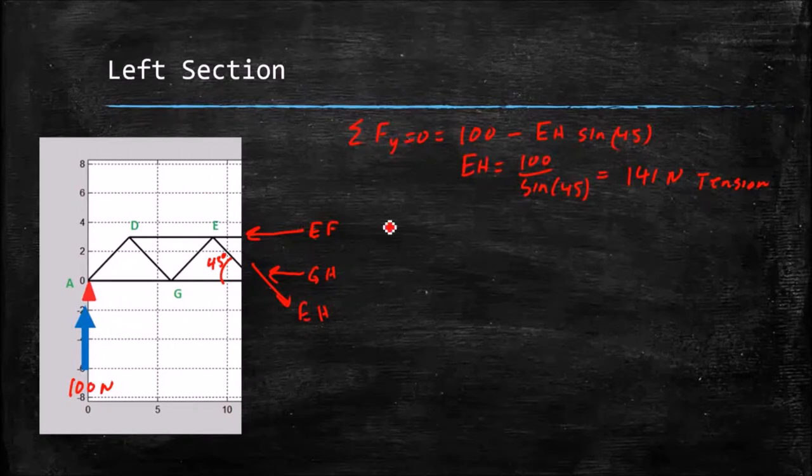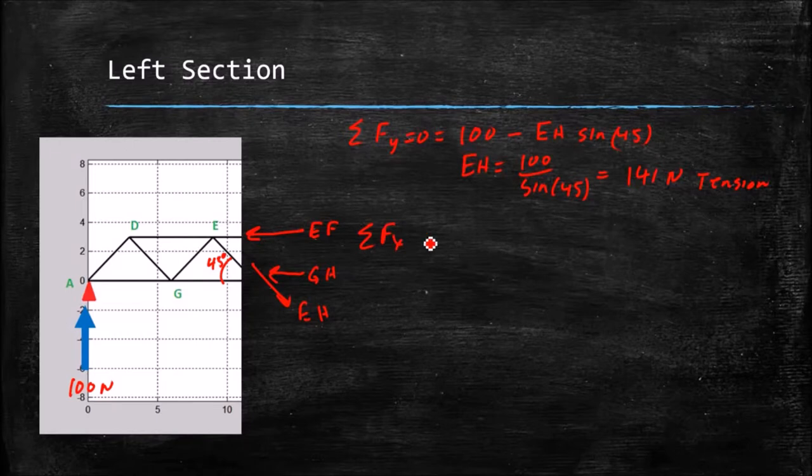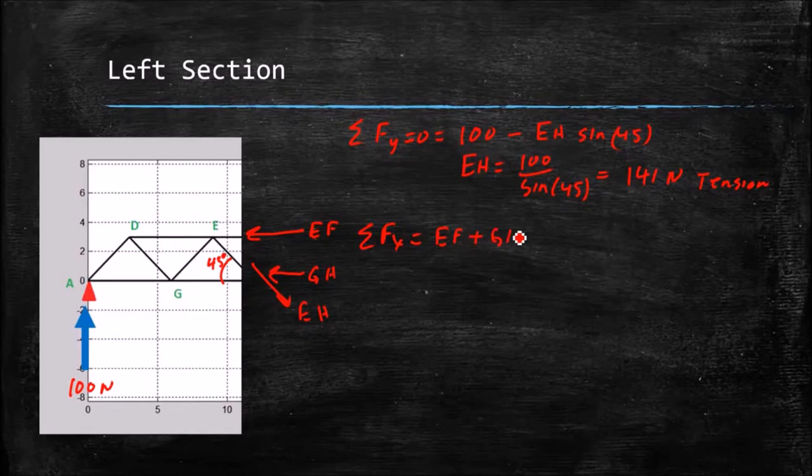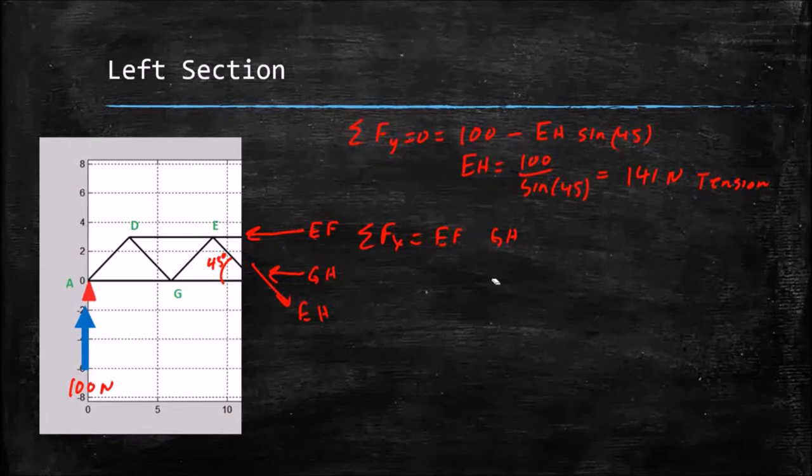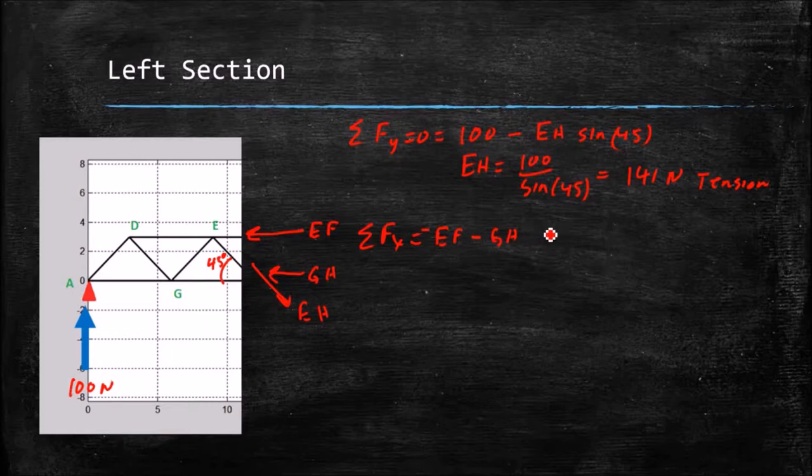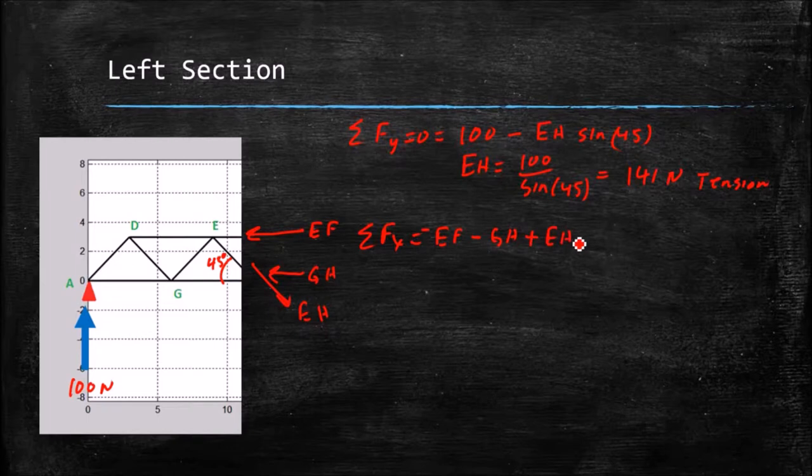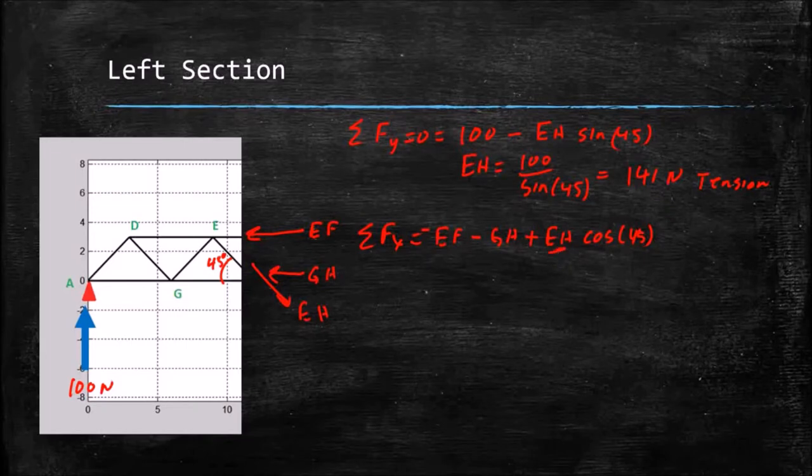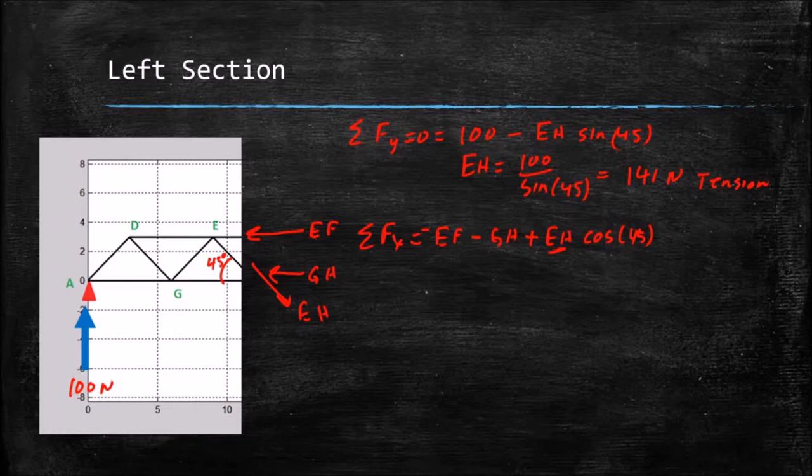I can do the sum of the forces in the X direction equals zero. And assuming compression, I've got EF, and that's what I assumed when I drew those arrows there, plus GH. Actually, those should be negative, because if they're in compression, they're pointing to the left, so that's negative EF minus GH plus EH cosine, the X component of 45. And I've got two unknowns in there, because I know EH, I know that magnitude, I don't know the other two, so we're not quite ready for that equation.